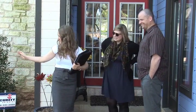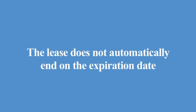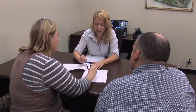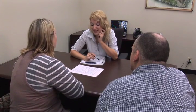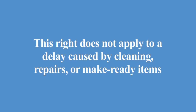Paragraph three, Term. This paragraph contains the term of the lease. It provides the commencement date and the date the initial term expires. Please remember that the lease does not automatically end on the expiration date. It also requires the tenant to occupy the property by the fifth day of the lease. If the tenant is unable to occupy the property by the fifth day due to construction on the property or the prior tenant holding over, this paragraph explains their right to terminate the lease. This right does not apply to a delay caused by cleaning, repairs, or make-ready items.